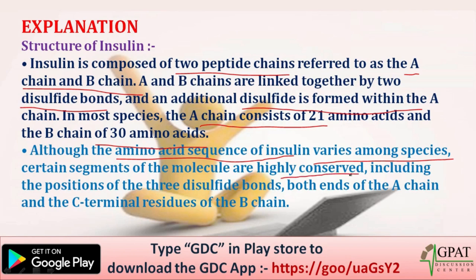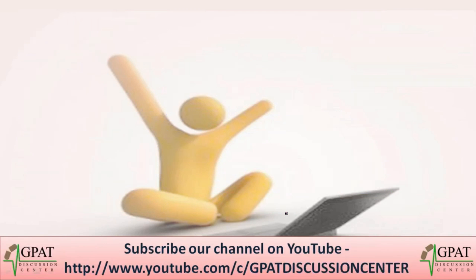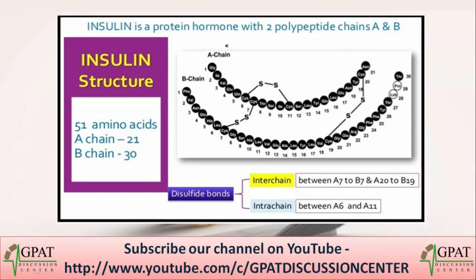The amino acid sequence of insulin varies among species, but certain segments are highly conserved, including the position of the three disulfide bonds, both ends of chain A, and the C-terminal residues of chain B. In summary, insulin consists of 51 amino acids divided into two chains linked by disulfide bonds.